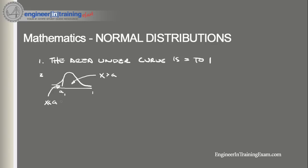Now I want to define some general terminology. Every normal curve, regardless of its mean or standard deviation, conforms to the following rule. Say this is one standard deviation to the left and one standard deviation to the right of the mean. 68% of the area under the curve falls within one standard deviation of the mean.